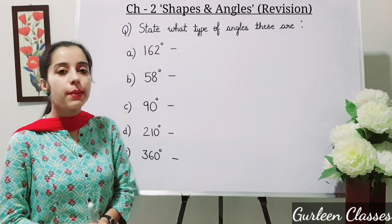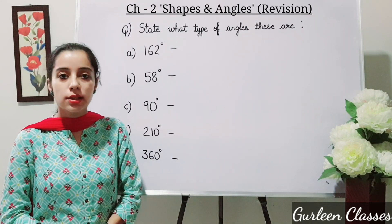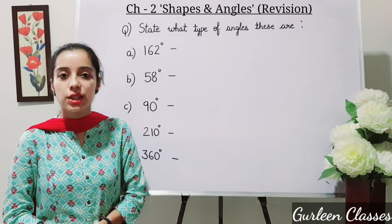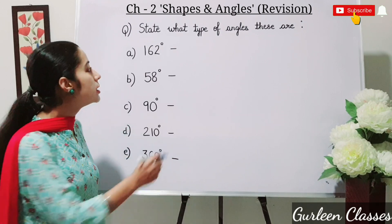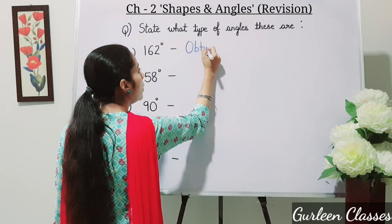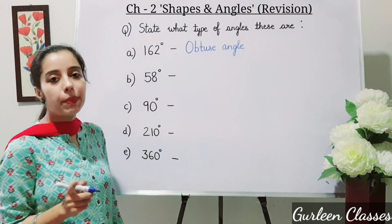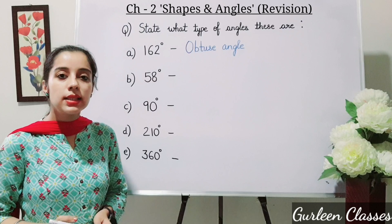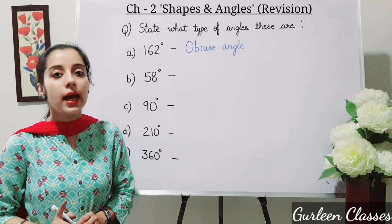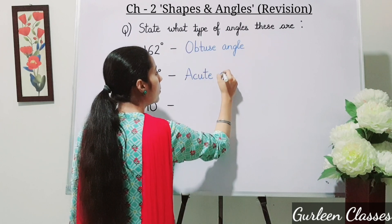The question is: state what type of angle each of these is. Part A: 162 degrees. This angle is more than 90 degrees and less than 180 degrees, so this is an obtuse angle. Part B: 58 degrees. This is more than 0 degrees but less than 90 degrees, so this is an acute angle.